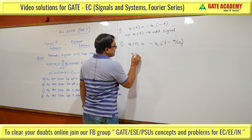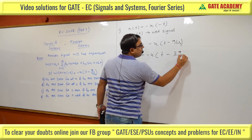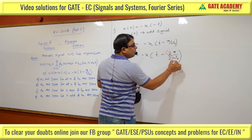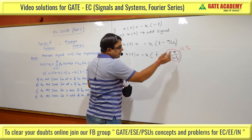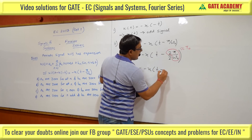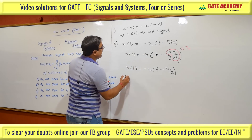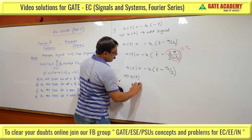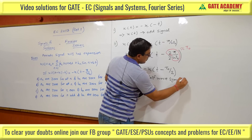The second condition: x(t) = -x(t - π/ω₀). Rewriting as x(t) = -x(t - (2π/2ω₀)). Since 2π/ω₀ is the time period T₀ of the signal, this becomes x(t) = -x(t - T₀/2). This is exactly the definition of a half-wave symmetric signal. So x(t) is a half-wave symmetric signal.